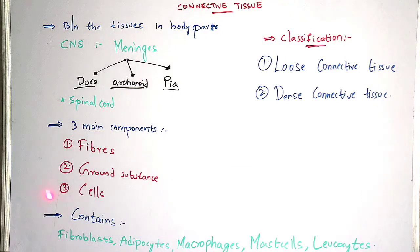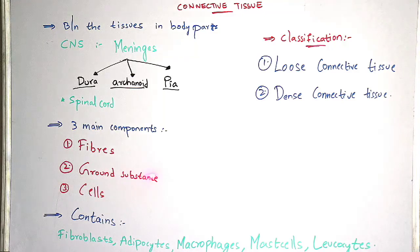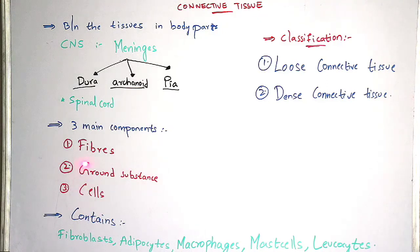Coming to the second component — ground substance. Ground substance is nothing but an extracellular matrix which is mainly present in a tissue, and within that matrix there is a presence of cells. So cells are mainly present in the matrix which is referred to as ground substance.